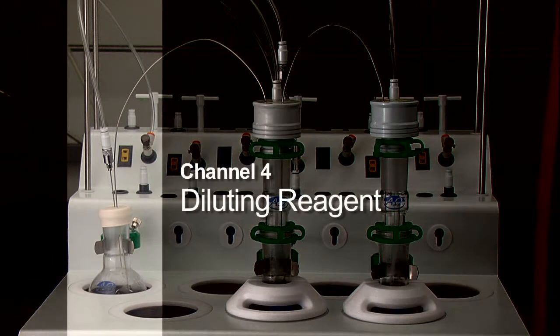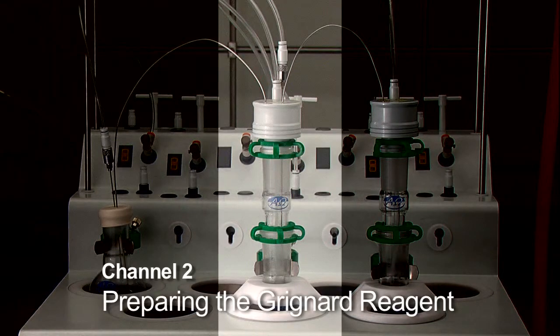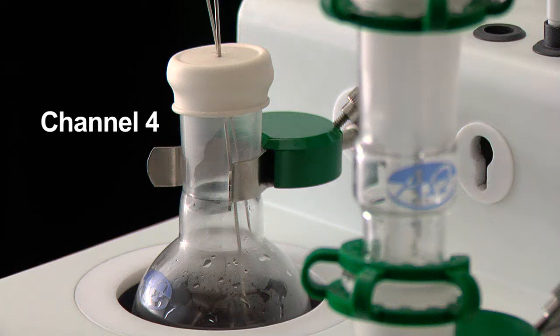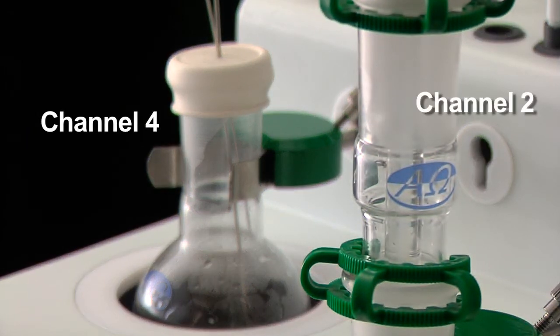First, we dilute phenyl bromide in channel 4. In channel 2, we prepare the Grignard reagent by heating the magnesium solution to 70 degrees and transferring the liquid in drops by inert gas from channel 4 to channel 2.